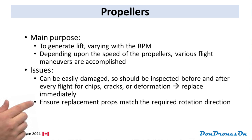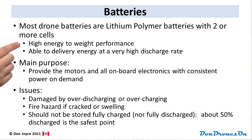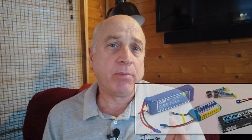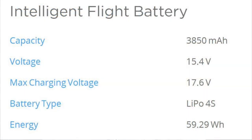Drone batteries are usually lithium polymer or LiPo batteries, although some drones, like the original DJI Mavic Mini, use lithium ion batteries. LiPo batteries provide the best energy-to-weight performance and offer a very high discharge rate — in technical terms, they have a lot of oomph and can deliver it fast. LiPo batteries are usually configured in packs with two or more individual cells hooked up in series. You'll see terms like 2S or 4S, which indicate how many cells are connected. Each cell provides about 3.7 volts nominally, but a full charge is typically 4.2 volts.